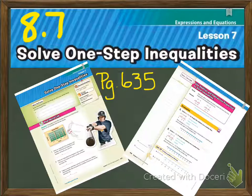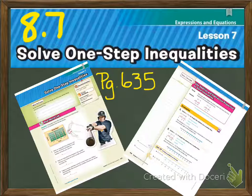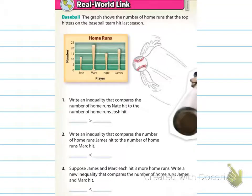We're on 8.7, Solve One-Step Inequalities, on page 635. Your pages should look like these. The first thing we're going to look at is the real-world link.